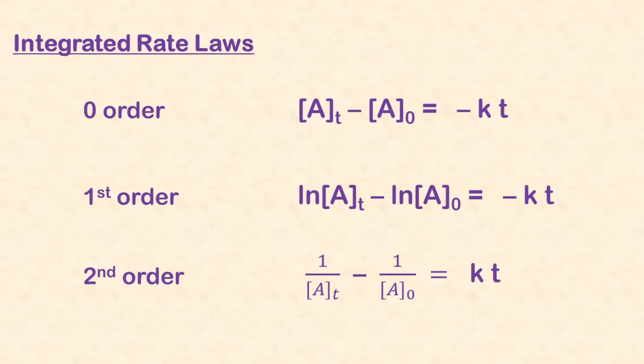Once we know the order for a reactant, we can use an integrated rate law equation to calculate the amount that will be left over after a certain amount of time. For each integrated rate law, we have the rate constant K, time elapsed T, initial concentration A sub zero, and elapsed concentration A sub T. If we know any three values, we can calculate the fourth.